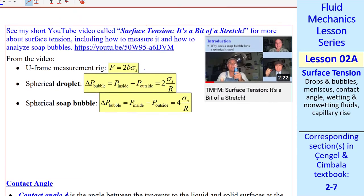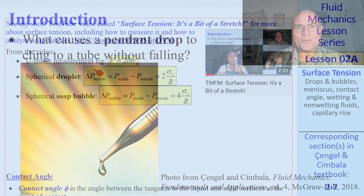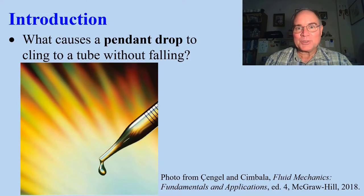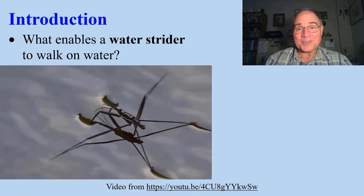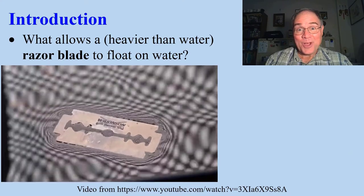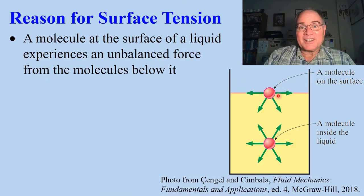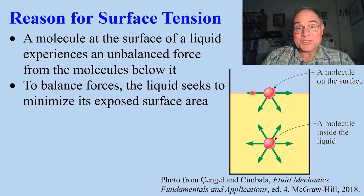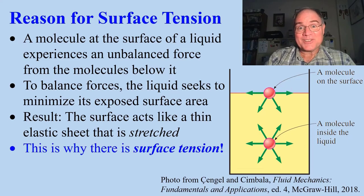I have a short video called Surface Tension. It's a bit of a stretch. I'll show some clips from that video. What causes a pendant drop to cling to a tube without falling? That would be surface tension. What enables a water strider to walk on water? Surface Tension. What allows a razor blade to float on water? Again, surface tension. Molecule right at the surface of a liquid experiences an unbalanced force from the molecules below it. To balance these forces, the liquid minimizes its surface area. The surface then acts like a thin elastic sheet that's stretched. This is why there's surface tension.